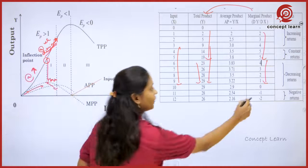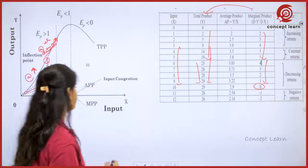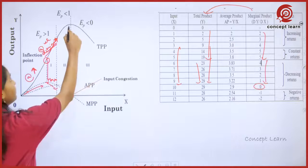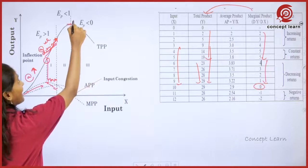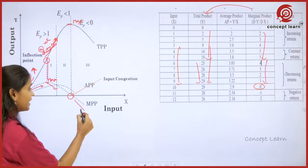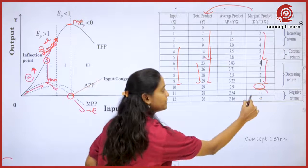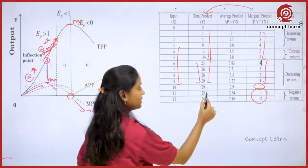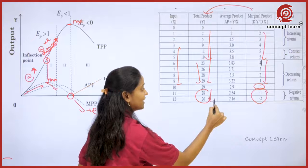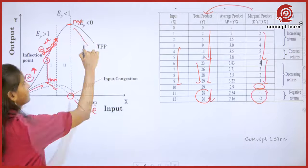Now, when MPP is zero, what happens? When MPP is zero, TPP is at its maximum. And when MPP becomes negative, TPP starts declining — it decreases.